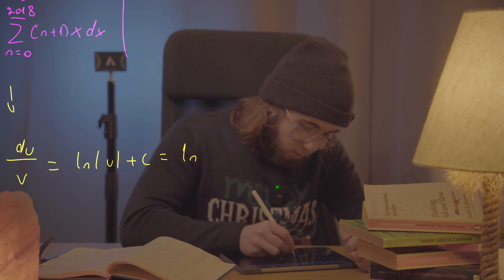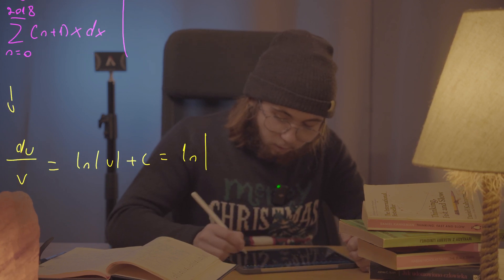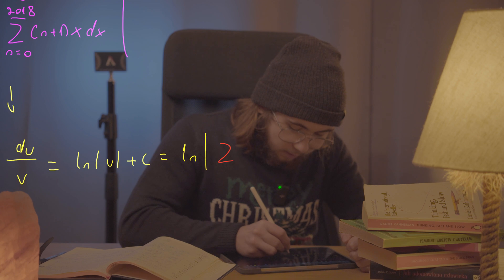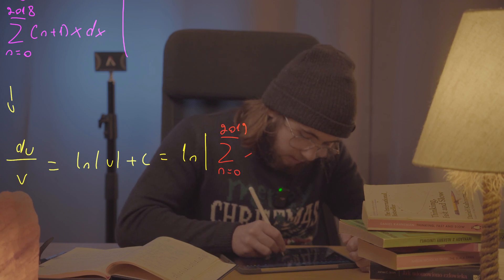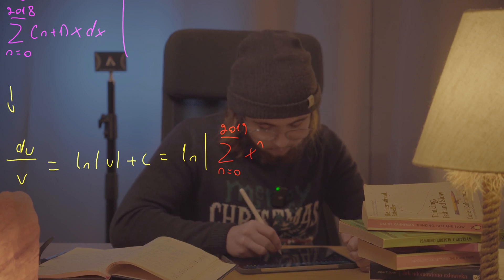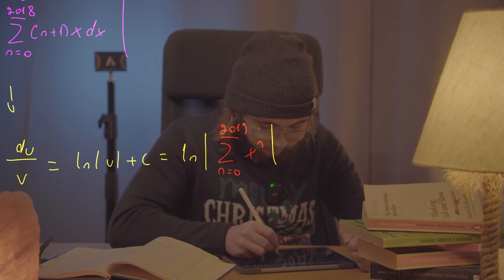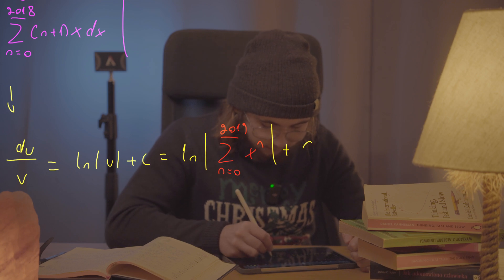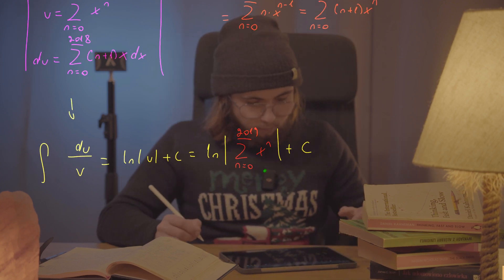So we get the natural log of the absolute value of the sum as n goes from 0 up to 2019 of x to the power of n, all in absolute value, plus a constant C.